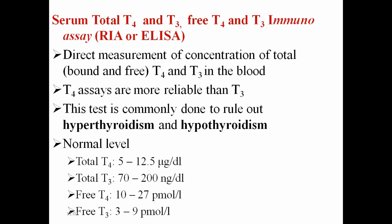The normal levels are: total T4 is 5 to 12.5 micrograms per deciliter, total T3 is 70 to 200 nanograms per deciliter, free T4 is 10 to 27 picomoles per liter, and free T3 is 3 to 9 picomoles per liter. Using high-sensitivity ELISA, CLIA, and RIA, it is now possible to measure free T4 and T3 in serum, minimizing interference by plasma proteins.